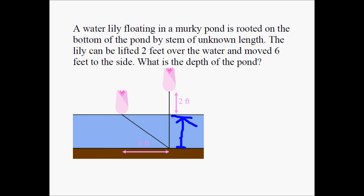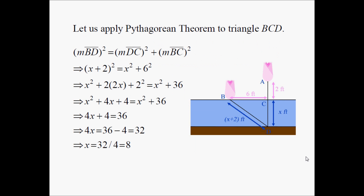If we knew the length of the stem, we would be all set, but we don't. So how do we solve this problem? It's a good idea to pause this video now and solve it on your own, but if you can't, the solution follows. I'm calling the depth of the pond x. Suppose the pond is x feet deep — that turns the length of the stem to x plus 2, because it's 2 feet above the depth of the pond.